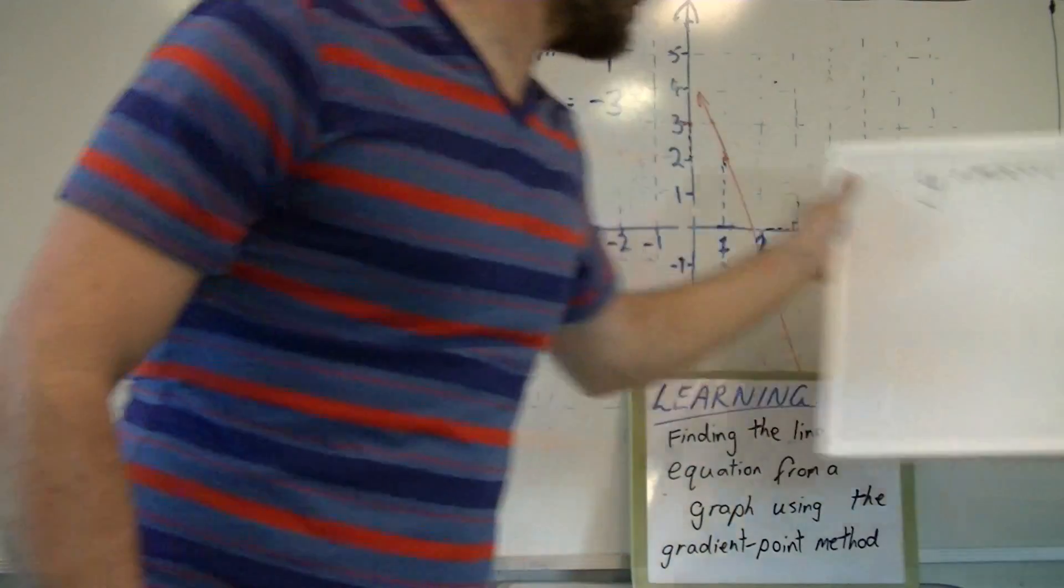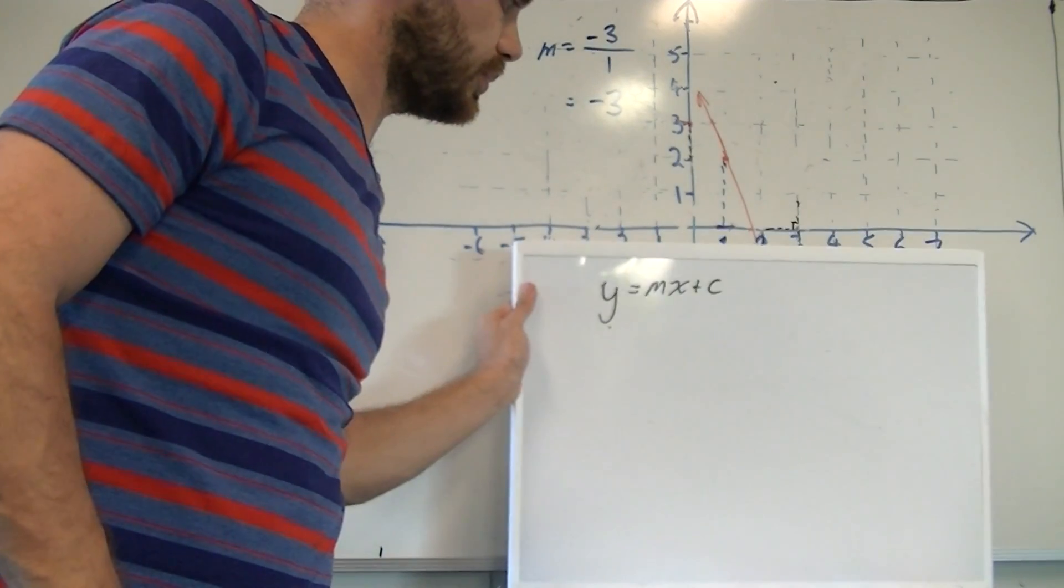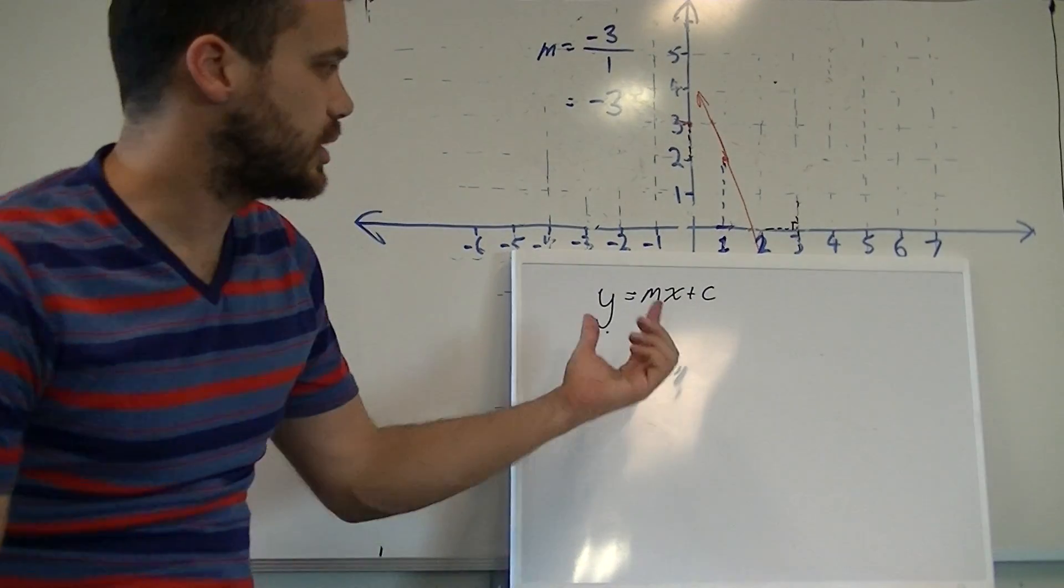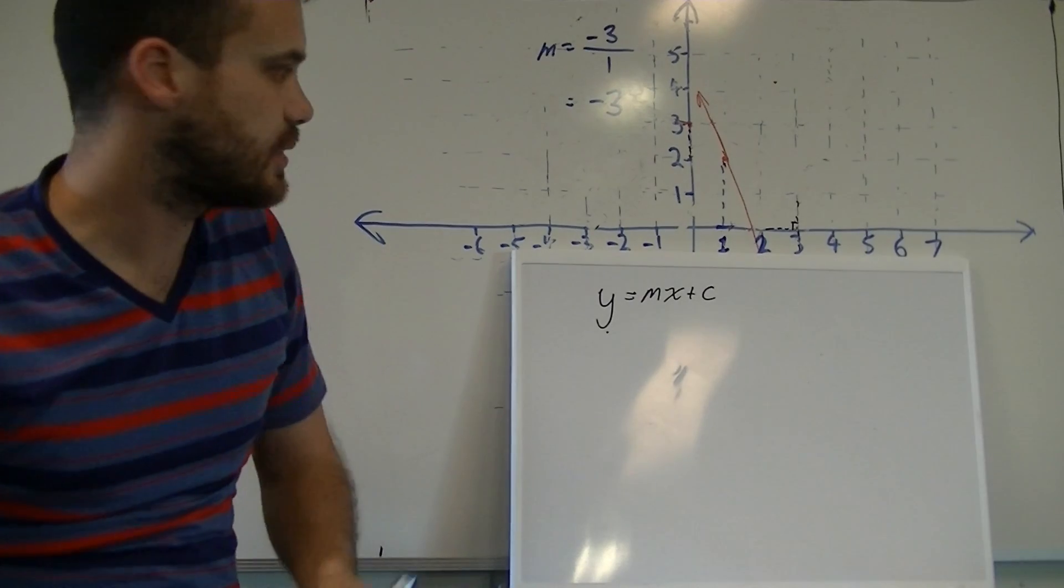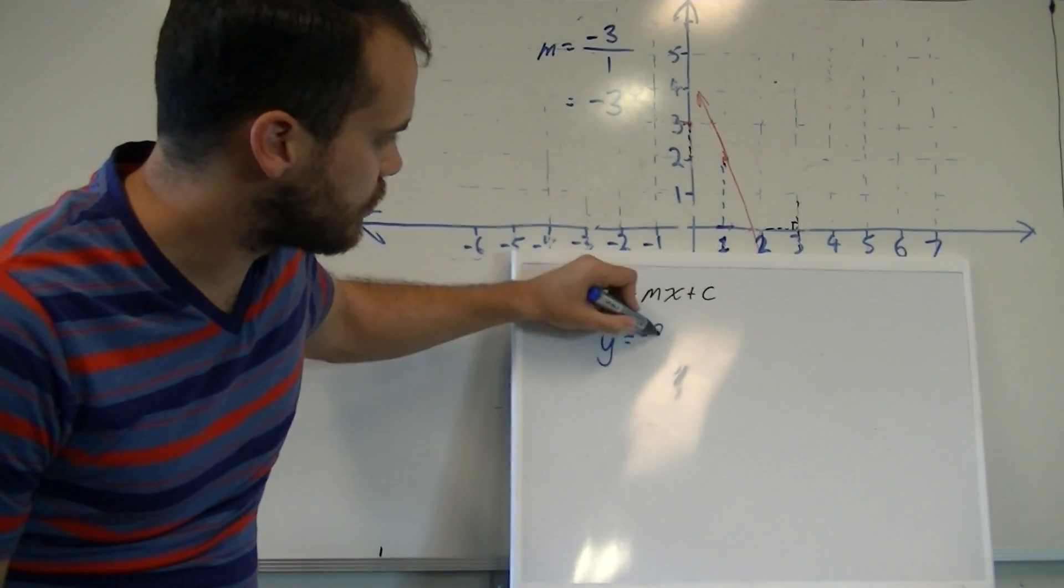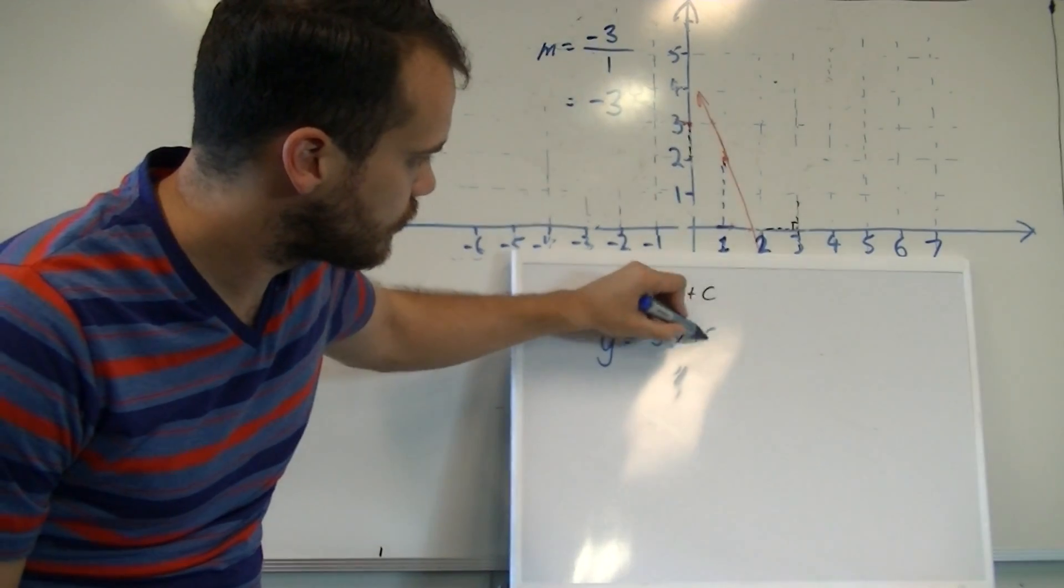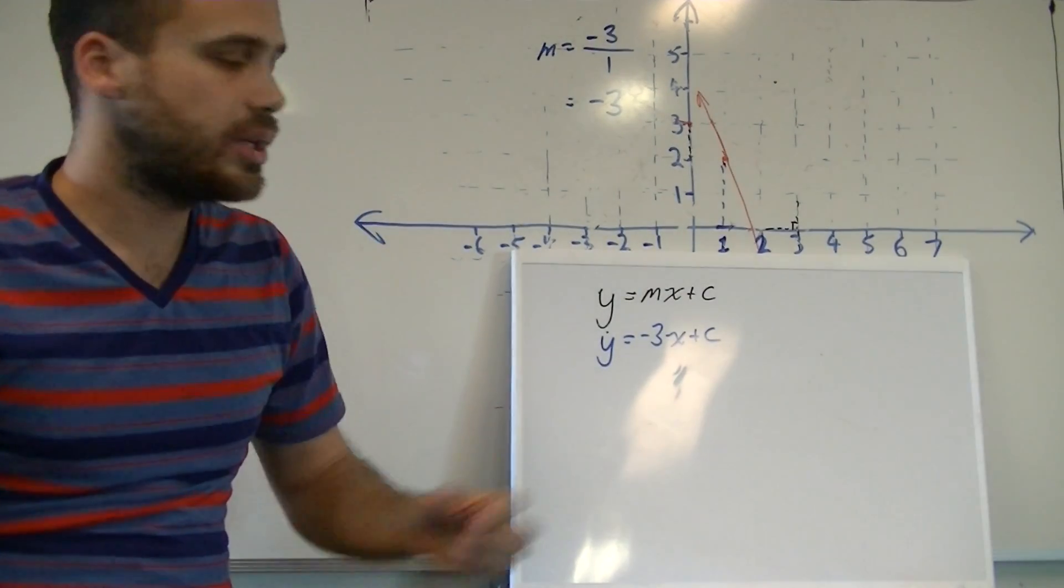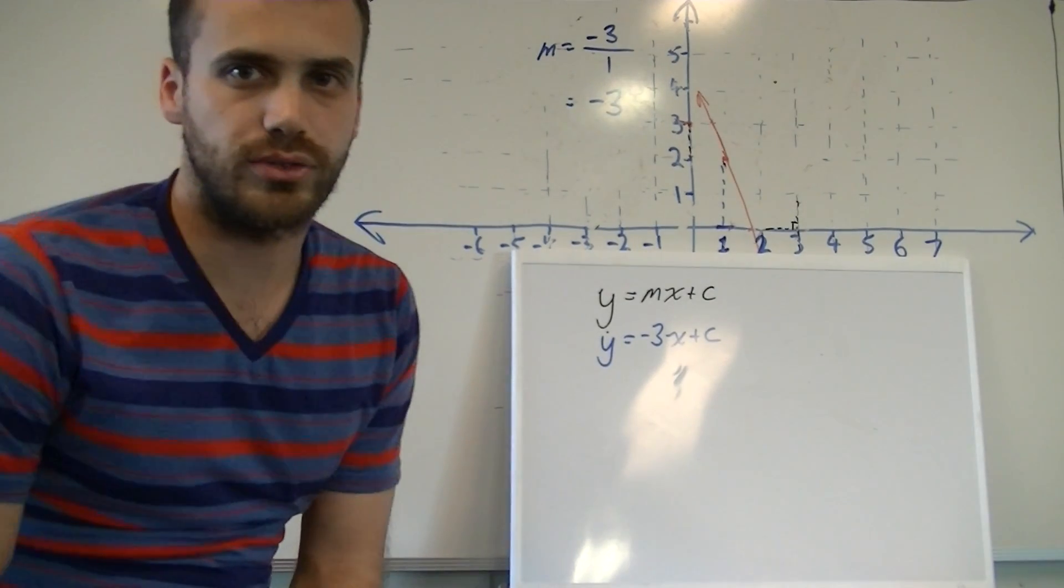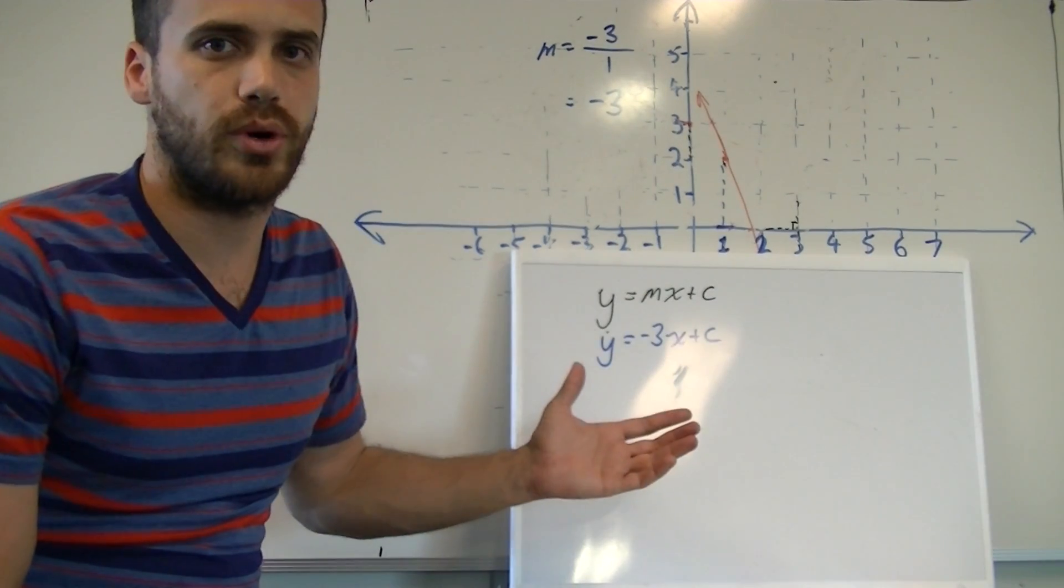Now, taking our second board here, remember that our general form of equation is y equals mx plus c. We know the m, we know that our m is negative 3. So all we need to do now is find that c value.